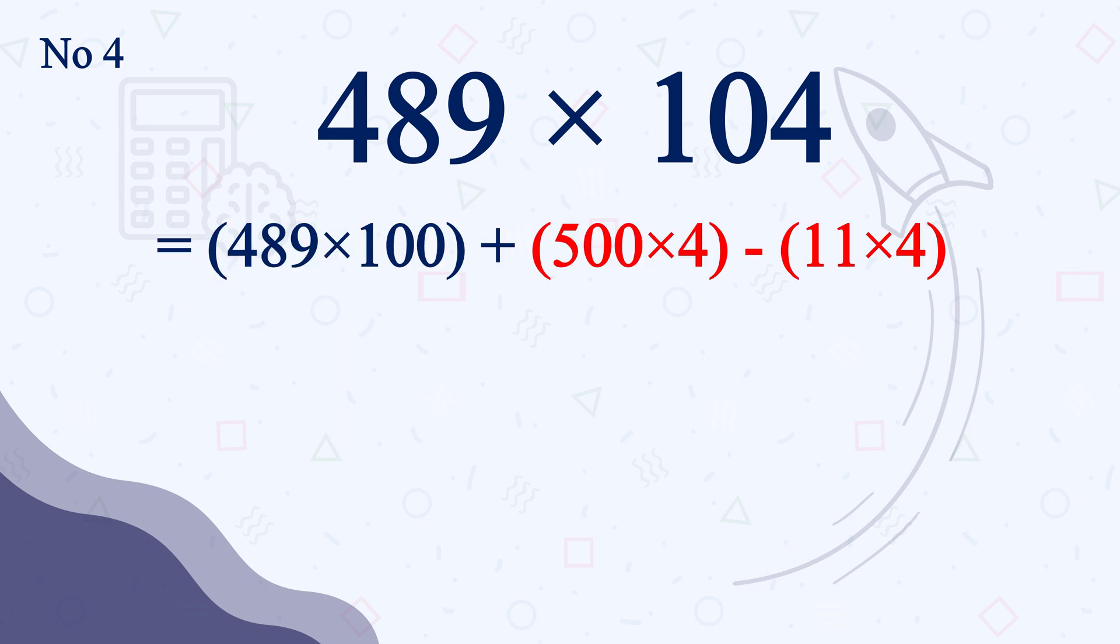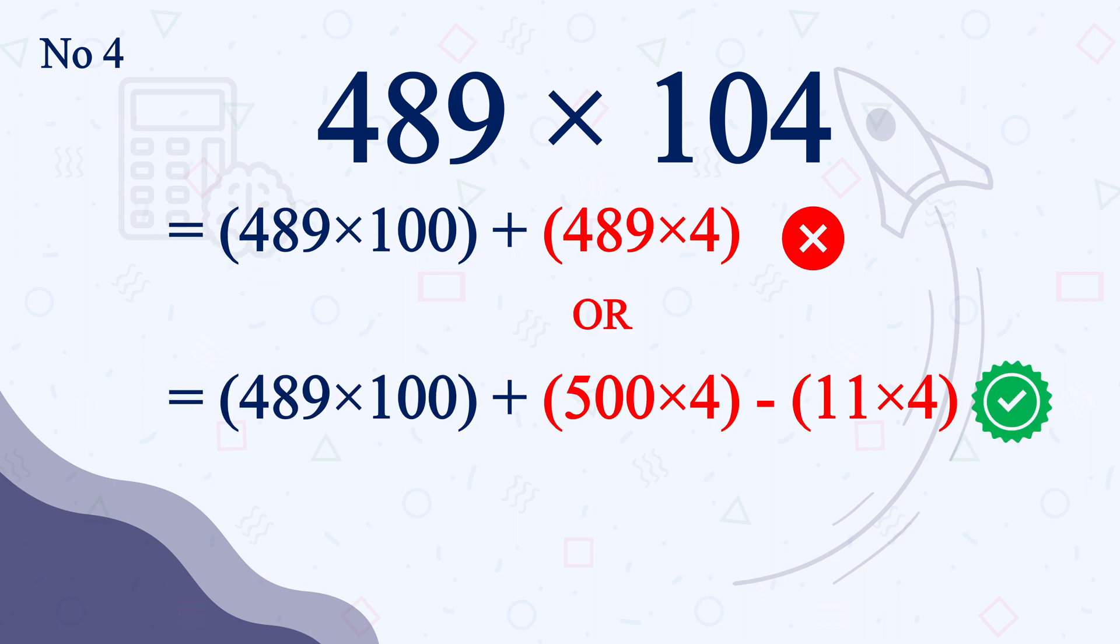Here is how we will break it. 489 times 100 plus 500 times 4 minus 11 times 4. Look, multiplying 489 with 4 is harder and more time consuming than multiplying 500 with 4 and then subtracting the extra part.